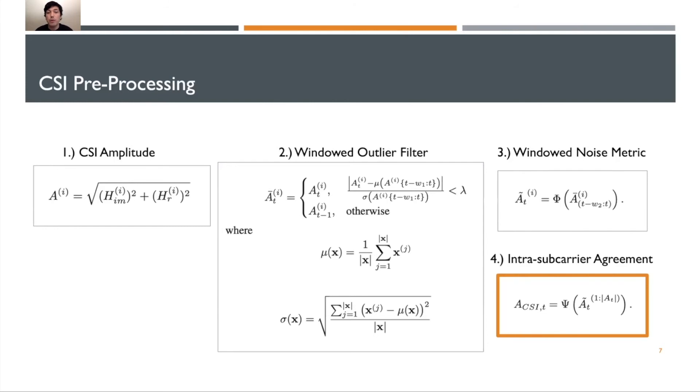On the other hand, if multiple subcarriers show a high amount of noise, then there's likely something in the environment that's causing this high noise across all of these subcarriers. What we're thinking it is is a human target. So we use this ACSI value to identify human movements in the following scenarios.